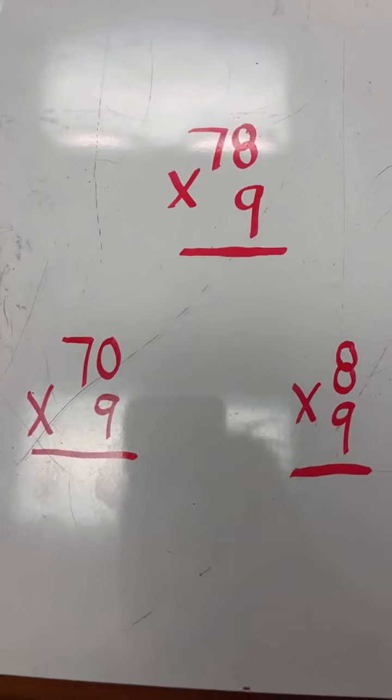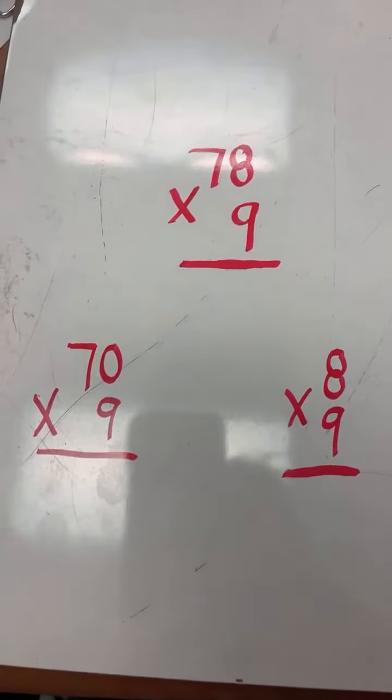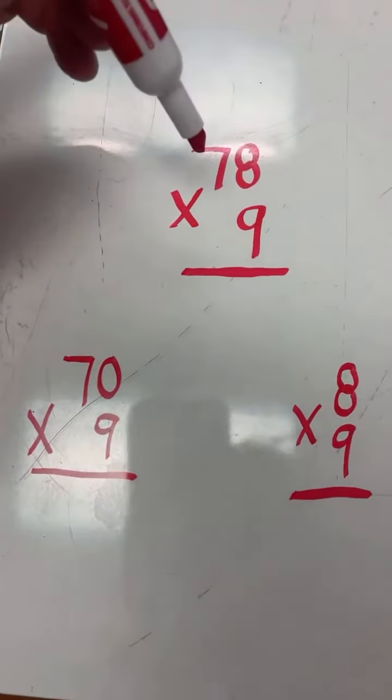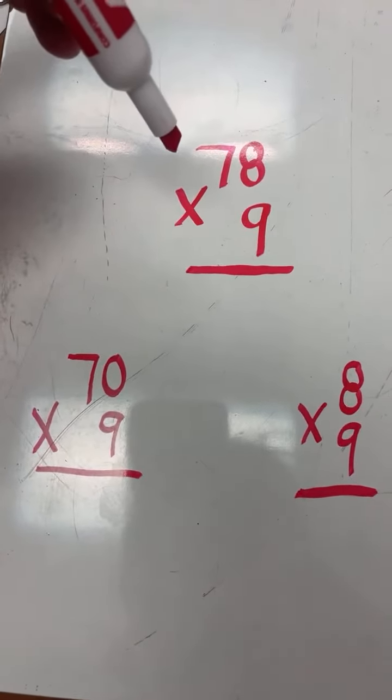So this video is going to be a review of the partial product method for multiplication. You have some example problems here. Our first example problem is 78 times 9. I'm going through step by step how to solve that problem.